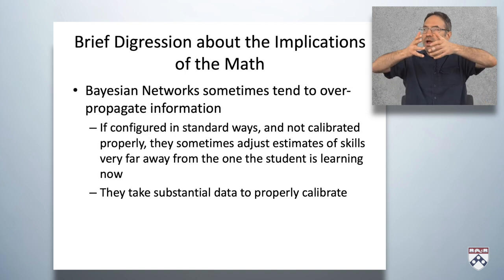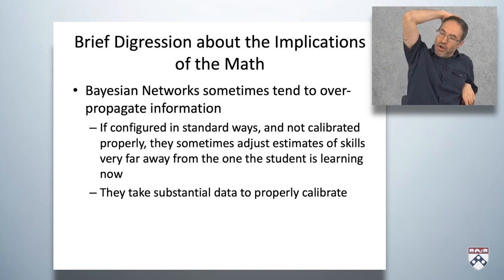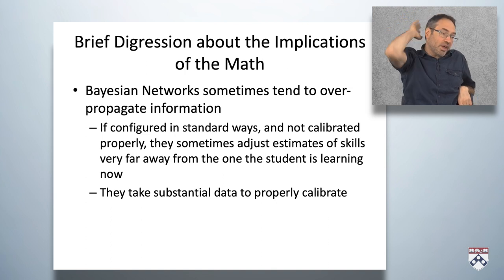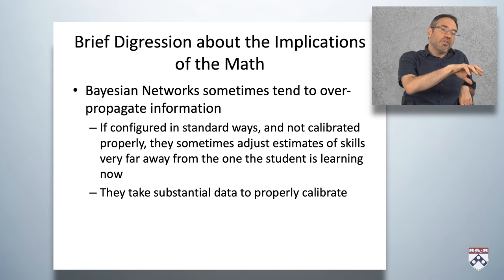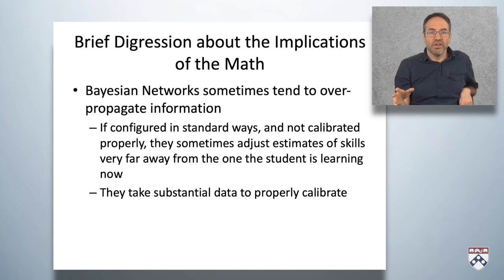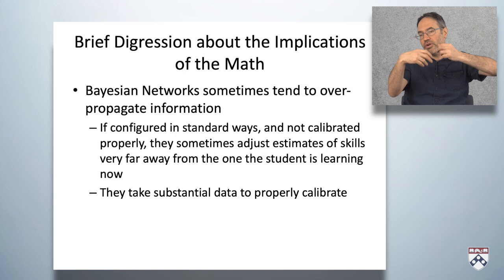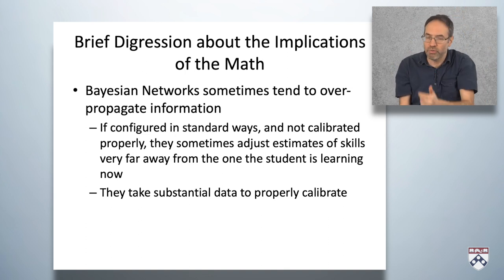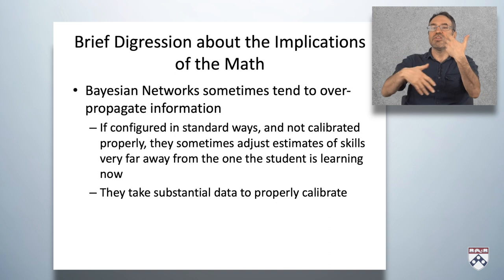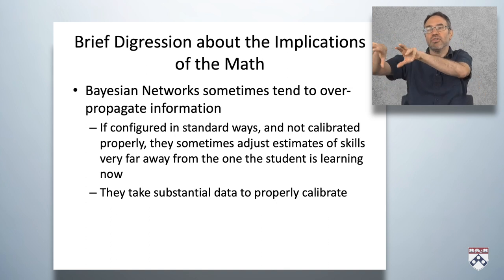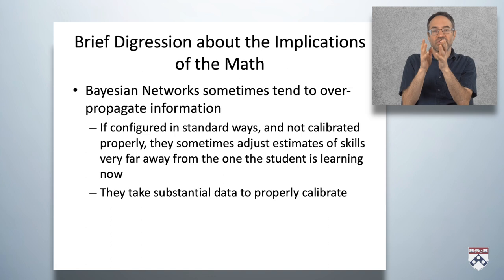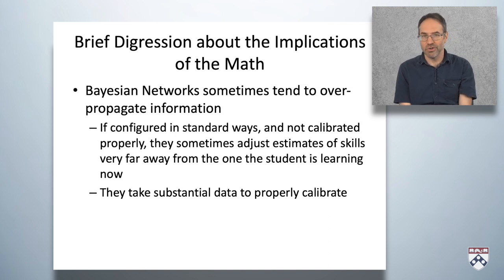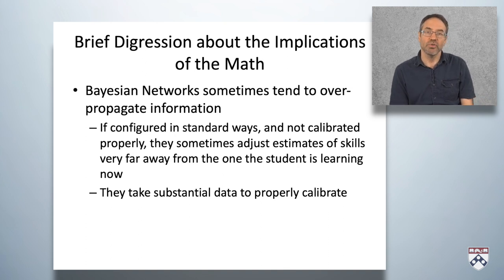For example, a student does a problem on multiplication, and the system says: addition is a prerequisite for multiplication, so they got multiplication right, so let's also update their estimate on addition. And subtraction is related to addition, so let's update subtraction as well. And then let's update these 17 other things in decreasing increments. This is not necessarily desired behavior in a mastery learning system, and it takes a lot of data to properly calibrate Bayesian networks — so that can be a real issue with them.